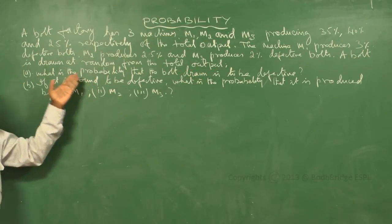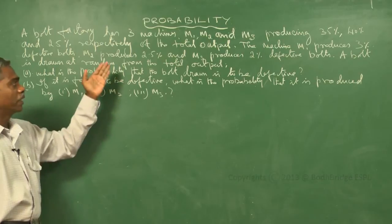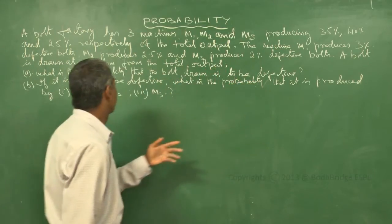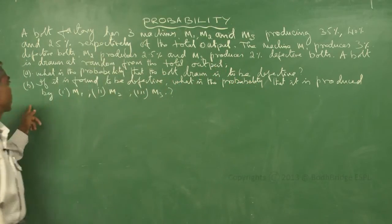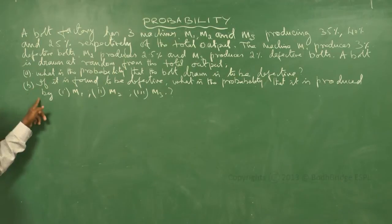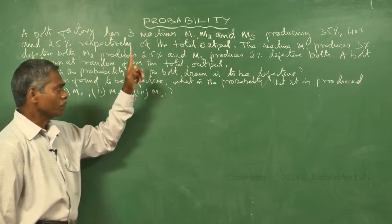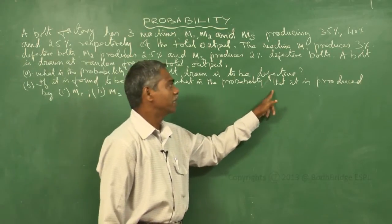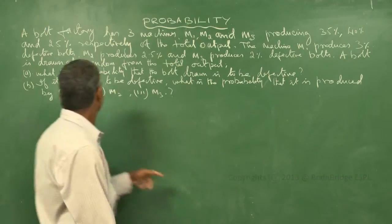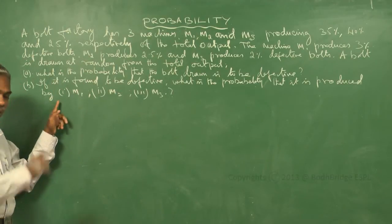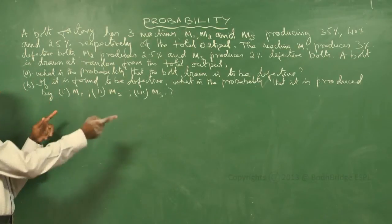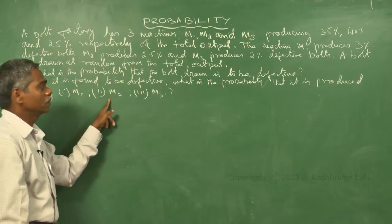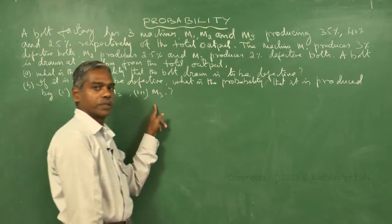There are two questions. First, what is the probability that the bolt drawn is defective? Second, if it is found to be defective, what is the probability that it is produced by machine M1, machine M2, and machine M3 — three separate sub-questions.